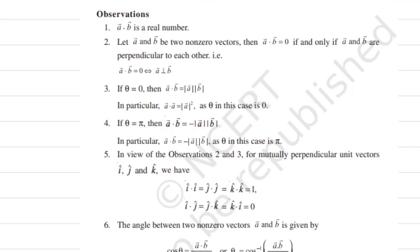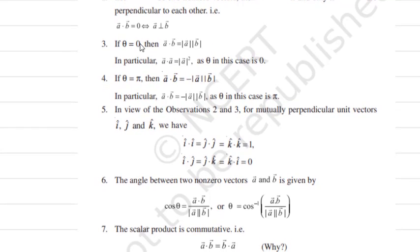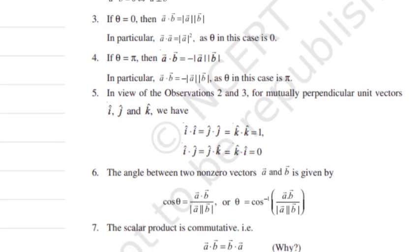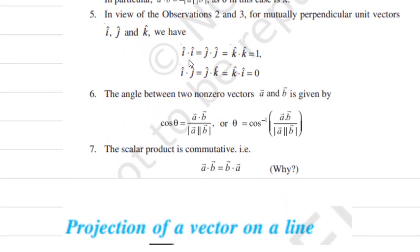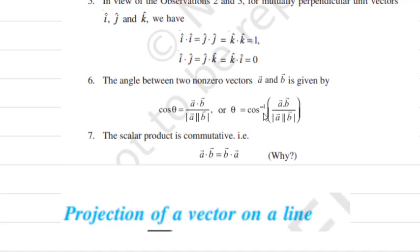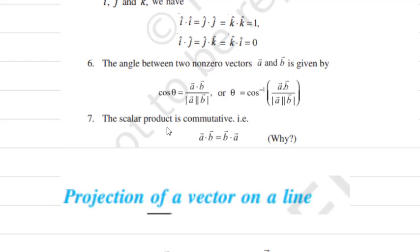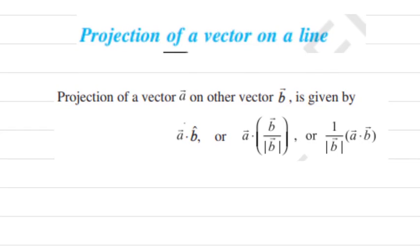Properties of the dot product: a dot b is always a real number. If the angle between two non-zero vectors is 90 degrees (perpendicular), the dot product is zero. If the angle is zero, the product equals the product of their magnitudes. If the angle is pi, the product is negative of the product of magnitudes. Also, the scalar product is commutative: a dot b equals b dot a.